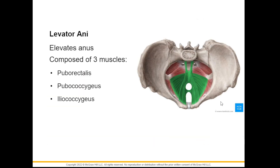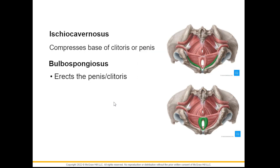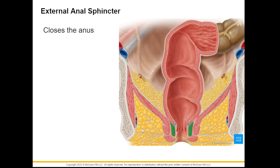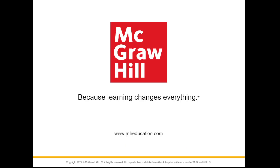Here are the muscles of the pelvic floor. First is the levator ani, which elevates the anus and is composed of three muscles: the puborectalis, pubococcygeus, and iliococcygeus. We also have the ischiocavernosus, which forms the base of the penis and clitoris, and the bulbospongiosus, which erects the clitoris and penis. Lastly we have the external anal sphincter. That's it, guys!